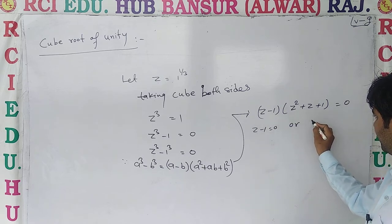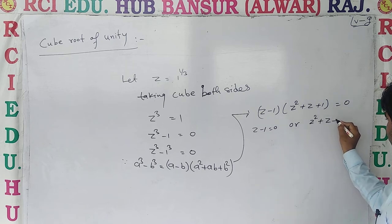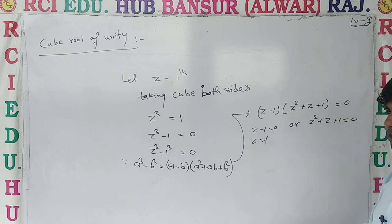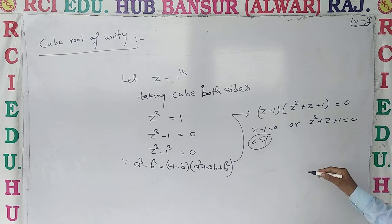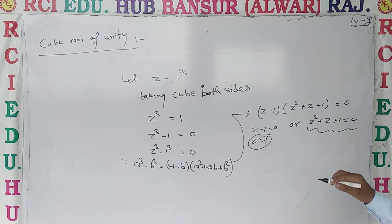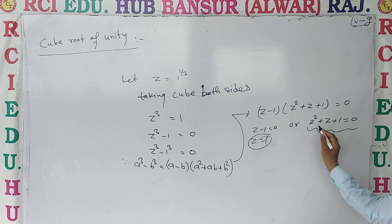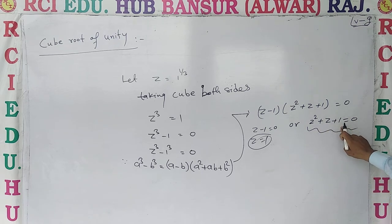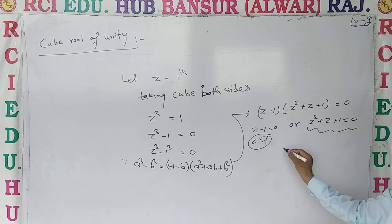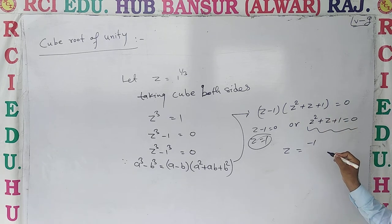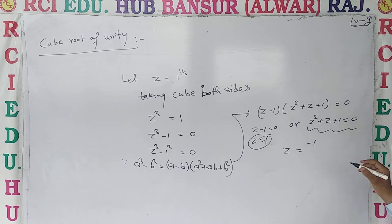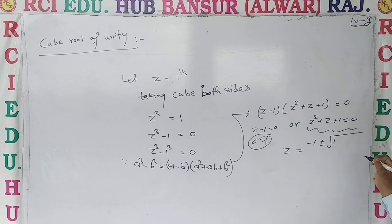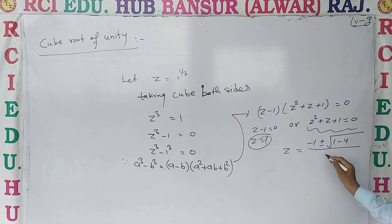So from here: z minus one equal to zero, giving z equal to one. And z square plus z plus one equal to zero — solve this. This is a quadratic equation, so use the quadratic formula. Z equal to minus B plus minus under root B square minus 4AC, upon 2.